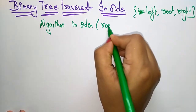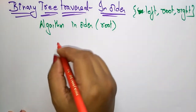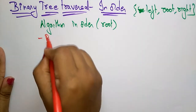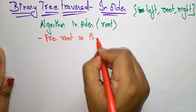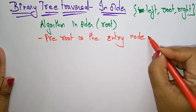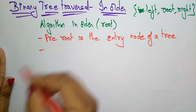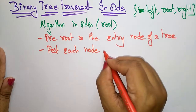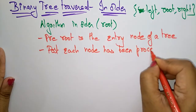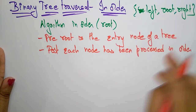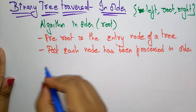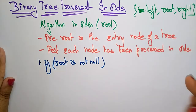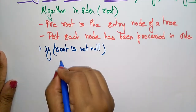The in-order traversal is everything based on the root node. We traverse the binary tree in left, root, right order. Each node is processed in a particular order — whatever order is mentioned, you process each node in that order. Now let's write the algorithm. First, we check if root is not null, meaning some nodes are present in the tree.